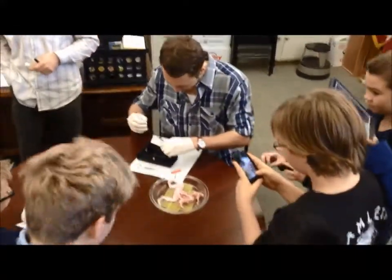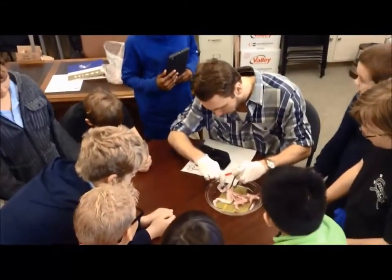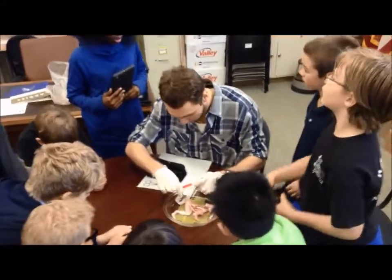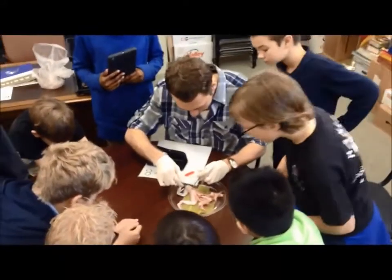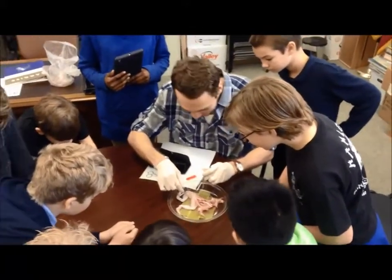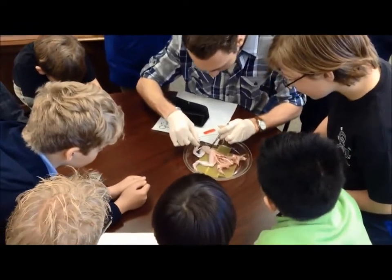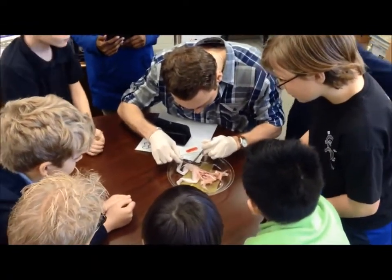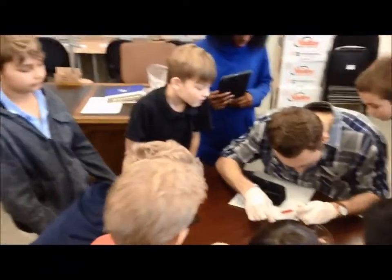Students observe the dissection in progress. The teacher points out the location near the hip bone, urging care. Students spot what appears to be the sciatic nerve - a little white path - and excitedly notice it moving when touched: 'Do you see it moving? Oh my gosh, the entire thing is moving!'